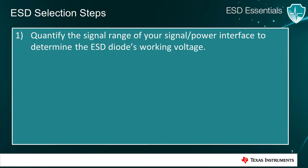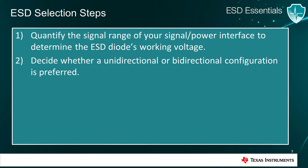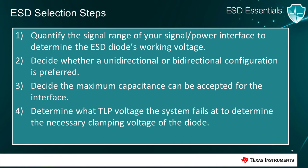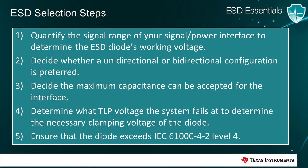The first step in ESD selection is to quantify the voltage range of the interface to determine the ESD diode's working voltage, or VRWM. The second step is to decide whether a unidirectional or bidirectional diode is preferred. The third step is to determine the maximum capacitance the diode can have without interfering with the interface signal. After that, determine what clamping voltage is required to protect the system. And the last step is to confirm that the ESD diode is rated for at least IEC 61000-4-2 Level 4, which is 8 kV contact and 15 kV air gap.